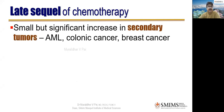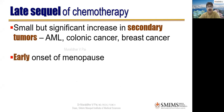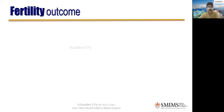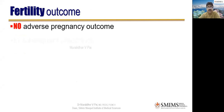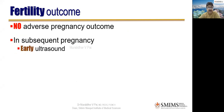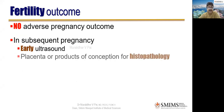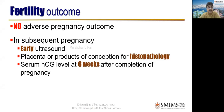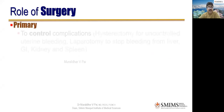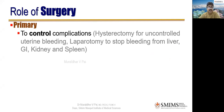Late sequelae of chemotherapy: small but significant increase in secondary tumors such as AML, colon cancer, and breast cancer. Early onset menopause may occur due to ovarian damage. However, fertility outcomes in younger patients are generally good — no adverse pregnancy outcomes in subsequent pregnancies. Early ultrasound is advised to rule out repeat vesicular mole, though recurrence is less than 2%. Placenta or products of conception should be sent for histopathology, and serum hCG checked at six weeks post-delivery.